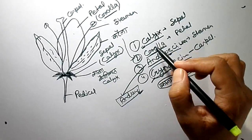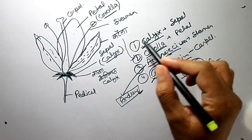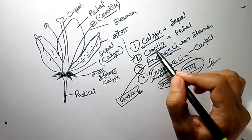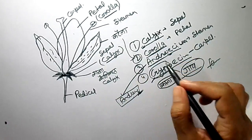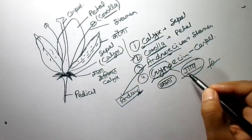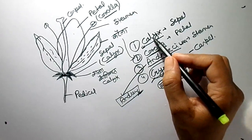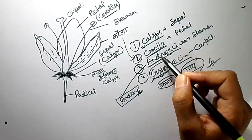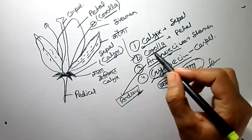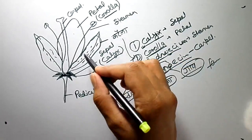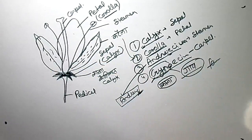So: Calyx, Corolla, Androsium, and Gynosium — these are the four parts. Calyx is the green part, Corolla is the colourful part, Androsium is the male part, and Gynosium is the female part.